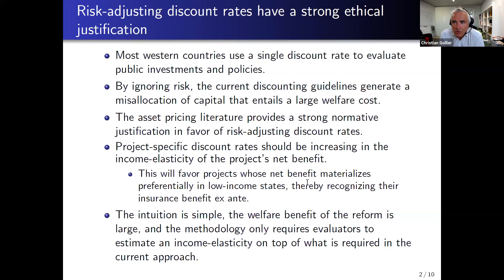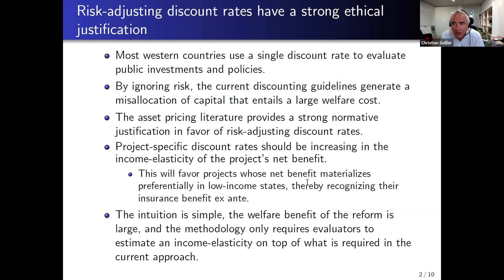The main idea is we should value more investment projects that generate more benefits in the worst state of nature. For example, we saw during the COVID crisis that ICUs are particularly useful when we have a pandemic, and in most pandemics we have an economic downturn. Projects that generate large value during a recession — those with a negative correlation between benefits and aggregate consumption — are particularly useful. We value more of that kind of project by using a smaller discount rate.